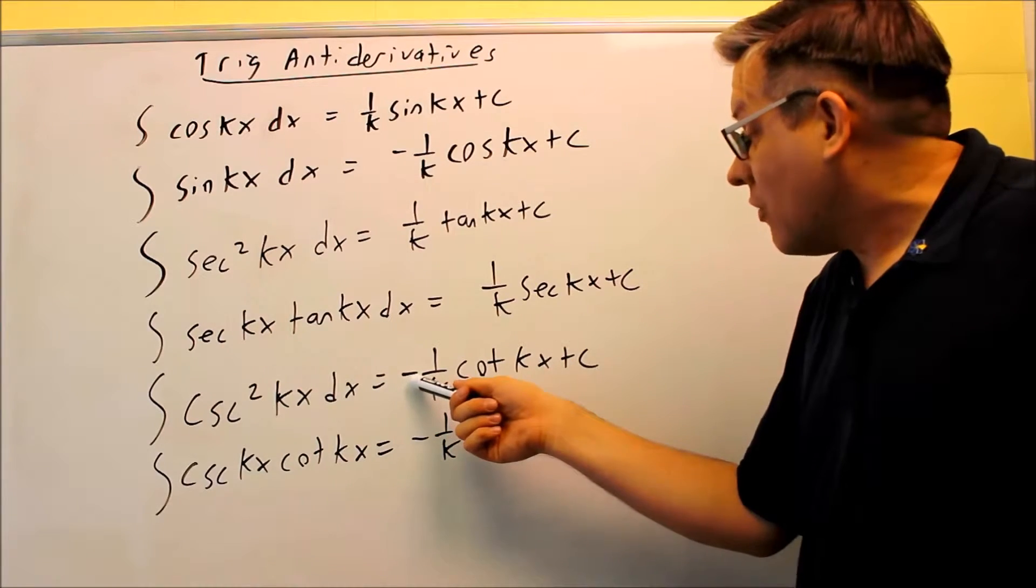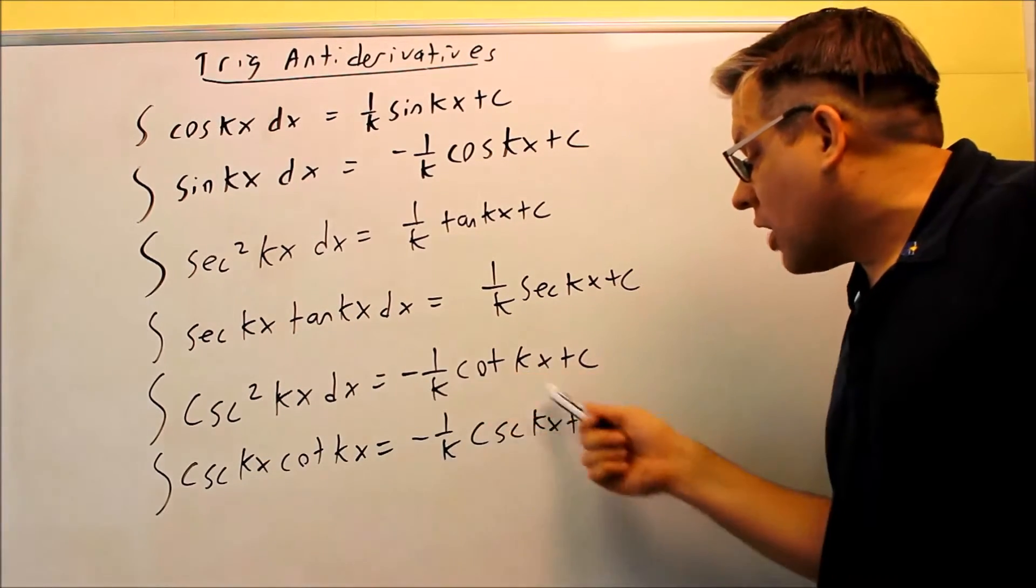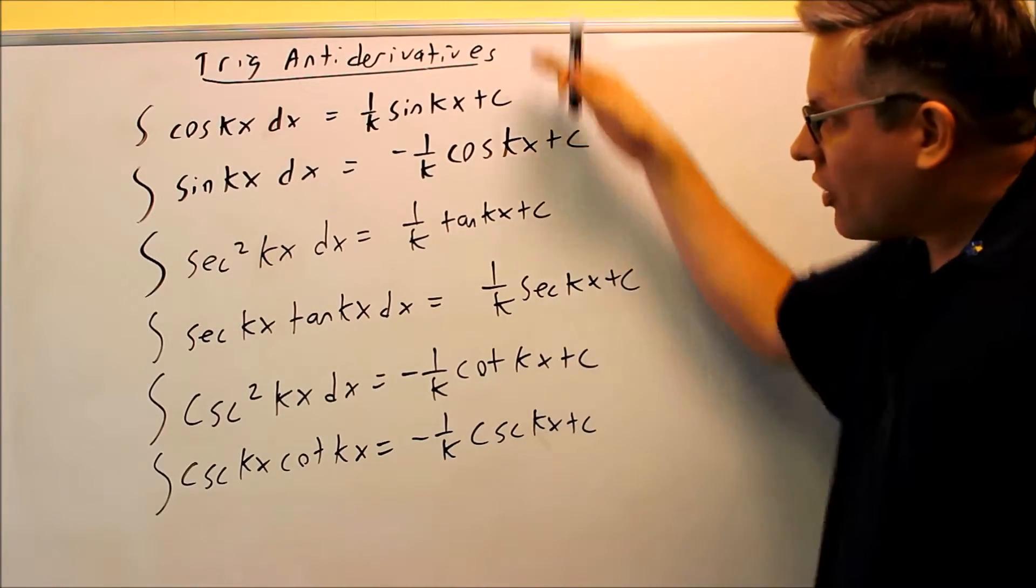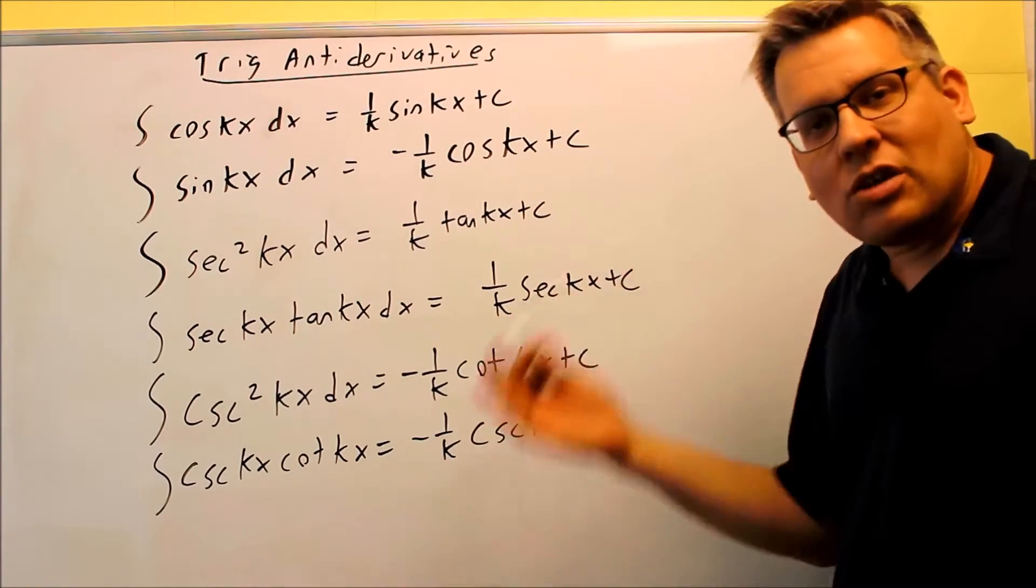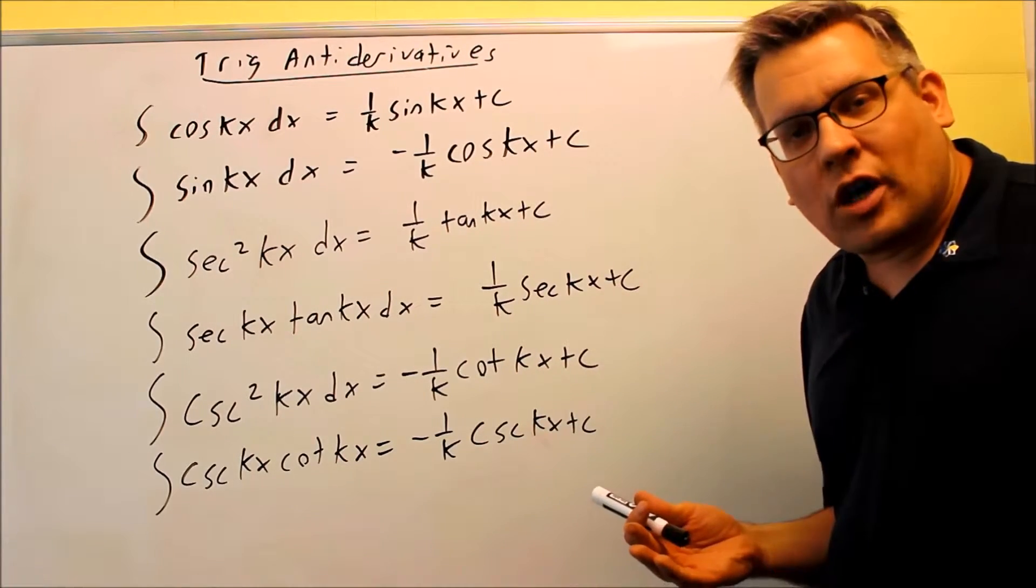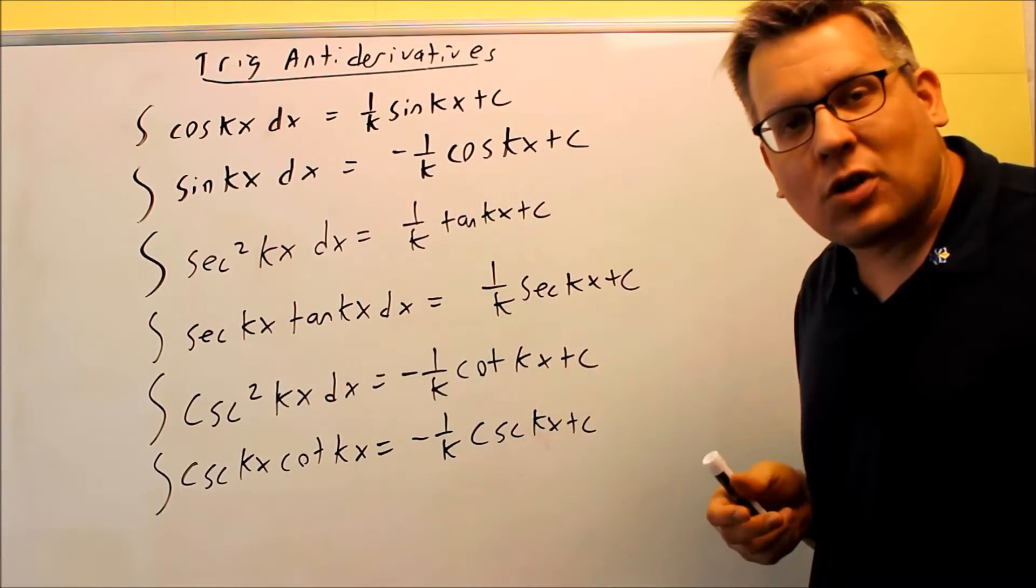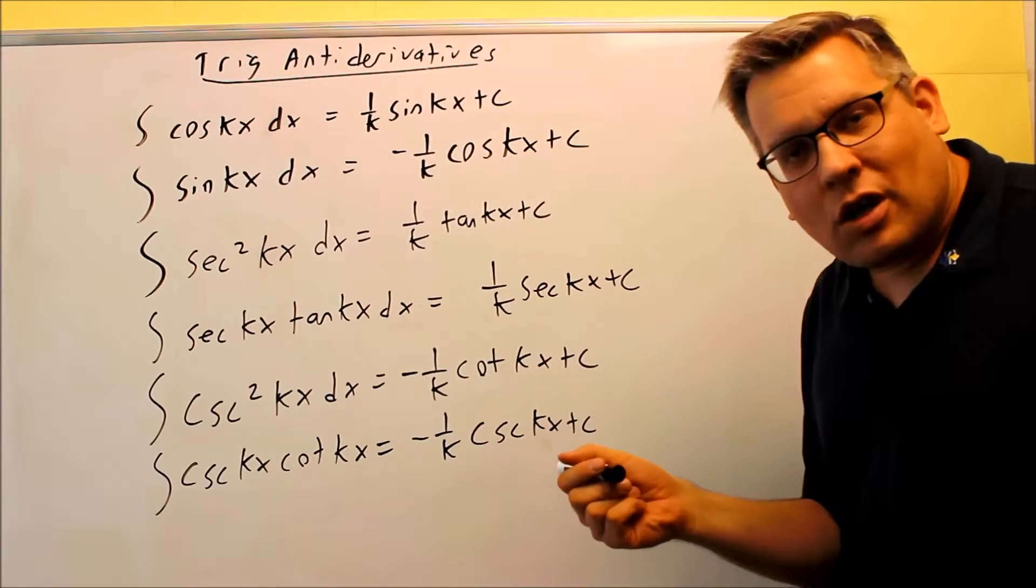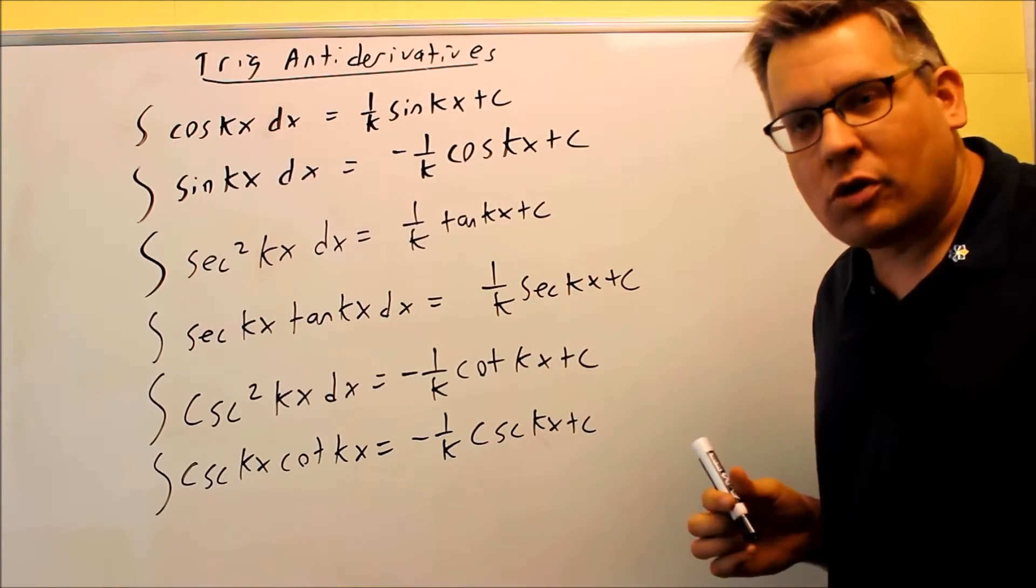For cosecants, you're going to get a negative here, negative cotangent. Cosecant cotangent, you'll get negative cosecant. And so all of these anti-derivatives, these are formulas that you should know. And the more practice that you have with these, they're going to become more familiar. But especially for those of you going on to second semester calculus, you need to memorize all these because when you're in calc 2, they're going to expect you to know this automatically. You don't want to keep checking back formulas. You want to be comfortable with knowing how these work.